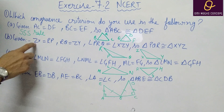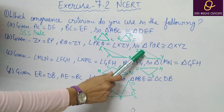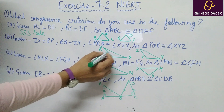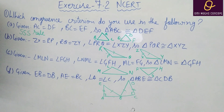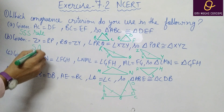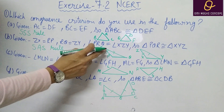For the second part: XY equal to RP, RQ equal to ZY, and angle PRQ equals angle XZY. So which rule will we apply? Side-Angle-Side (SAS) rule. We will use the Side-Angle-Side rule — side, then angle, then side.